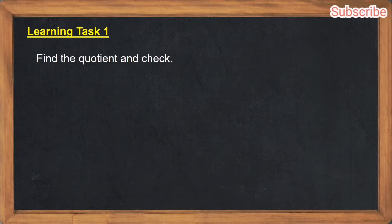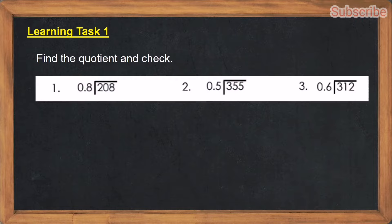Learning task number one: Find the quotient and check. For number one, 208 divided by 0.8. Number two, 355 divided by 5.5. And for number three, 312 divided by 6.